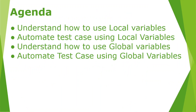Our agenda: first, we are going to understand how to use local variables, and I'll show you an example by automating a test case with local variables. Then we'll understand how to define and use global variables. I'll show you how to call global variables while automating a test case, and then we'll execute that test case. Now let's jump onto the system and see how to implement local and global variables using Katalon while automating our test cases.